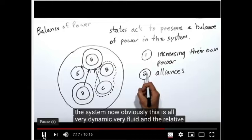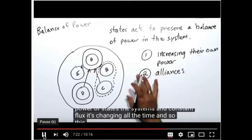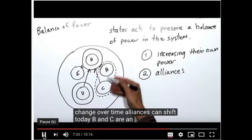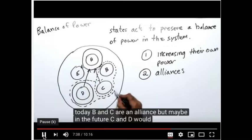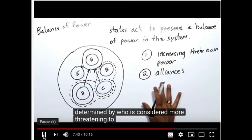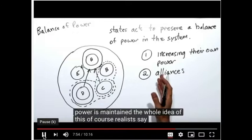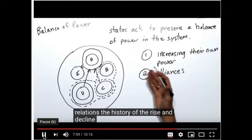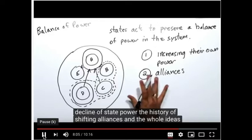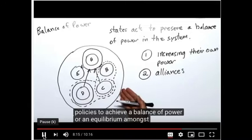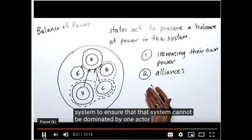This is all very dynamic and fluid — the relative power of states is in constant flux, requiring constant adjustment through states increasing their own power or engaging in alliances. Alliances can shift over time; today B and C may be allied, but in the future C and D might form an alliance, depending on who is considered more threatening. Realists argue this captures the entire history of international relations — the rise and decline of state power and shifting alliances — all originating from states seeking a balance of power to ensure no single actor dominates the system.